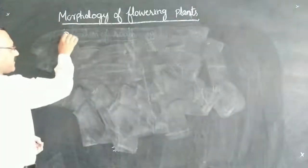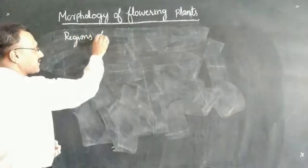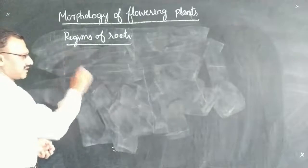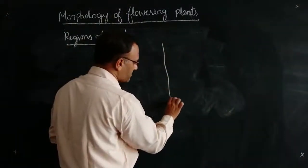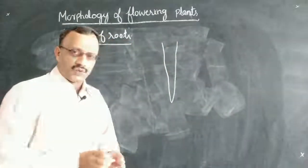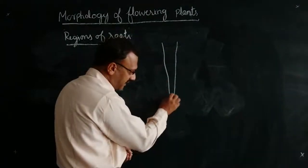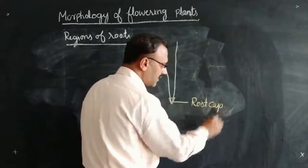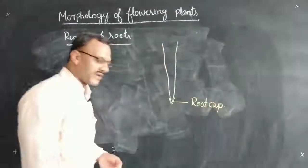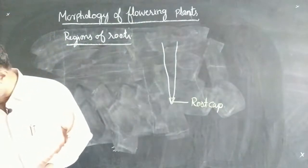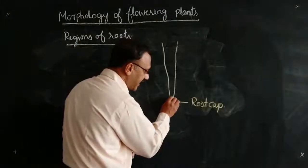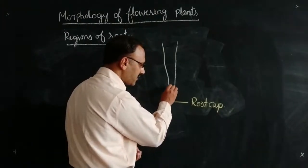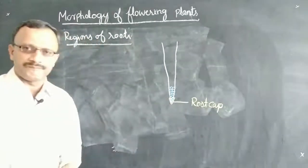Now we will see the regions of the root. Basically, the root shows three different regions. If you observe the root in the form of a diagram, the tip of the primary root is well protected by the root cap.